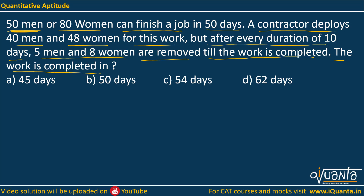If 50 men do that work, they complete it in 50 days. Now, to find out the total work, you can simply find the product of men and days, which gives you the total work in men days. So with 50 men taking 50 days, the total work is 2500 men days.